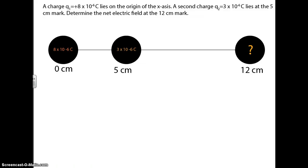Hi, I'm Alan, and I'll show you how to figure out this kind of problem. The charge Q1 equals 8 times 10 to the negative 6 coulombs lies on the origin of the x-axis. The second charge, Q2, equals 3 times 10 to the negative 6 coulombs lies at the 5 centimeter mark. Determine the net electric field at the 12 centimeter mark.